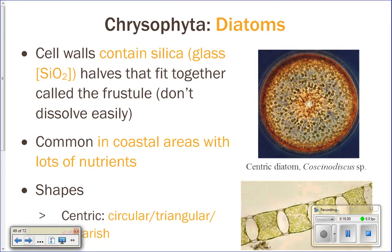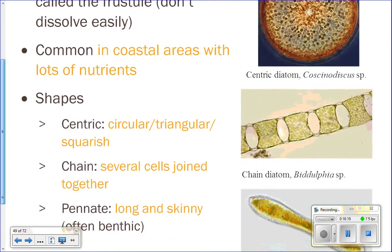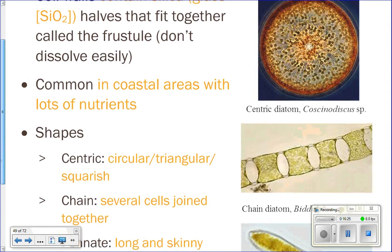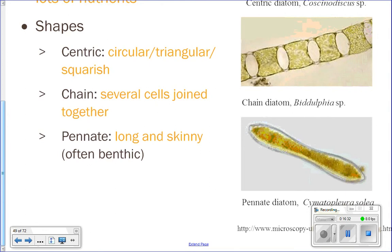The frustule does not dissolve easily — clearly, because it's glass, and we put water into glass because it doesn't dissolve and holds water well. Their frustule not dissolving easily has some implications for their reproduction, which I'll talk about in just a moment. There are three major shape types of diatoms, which you saw in your lab: the centric, which are the round, triangular, or square ones; chains, which are a bunch of them joined together; and the pennate, which are the long and skinny ones.